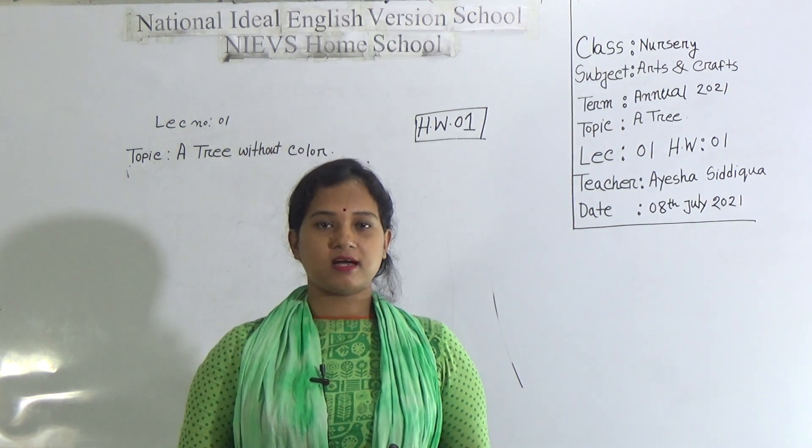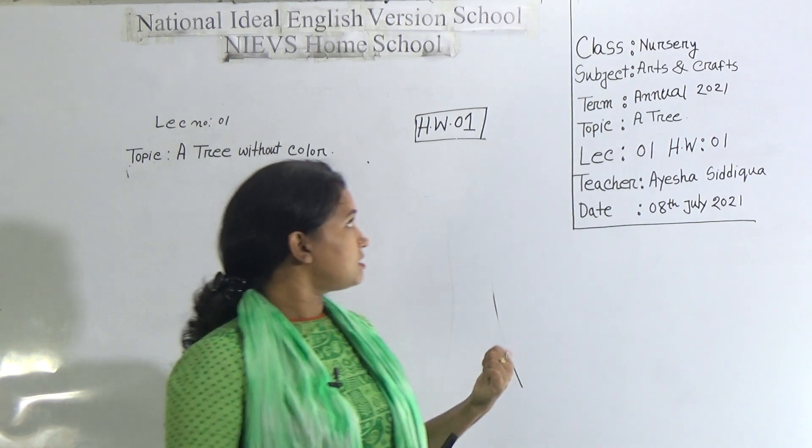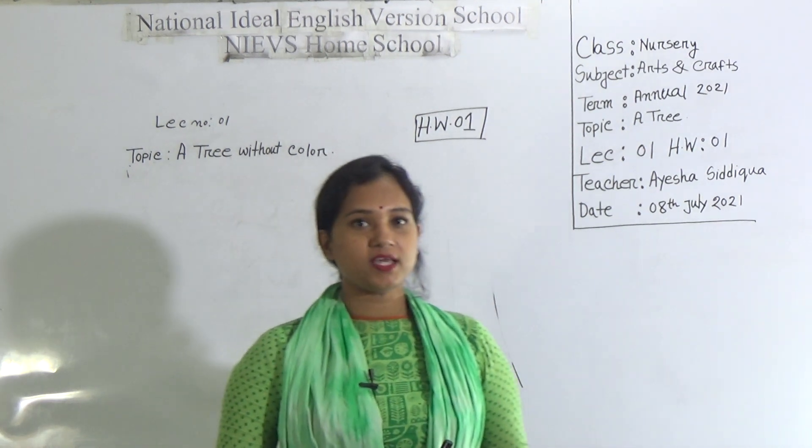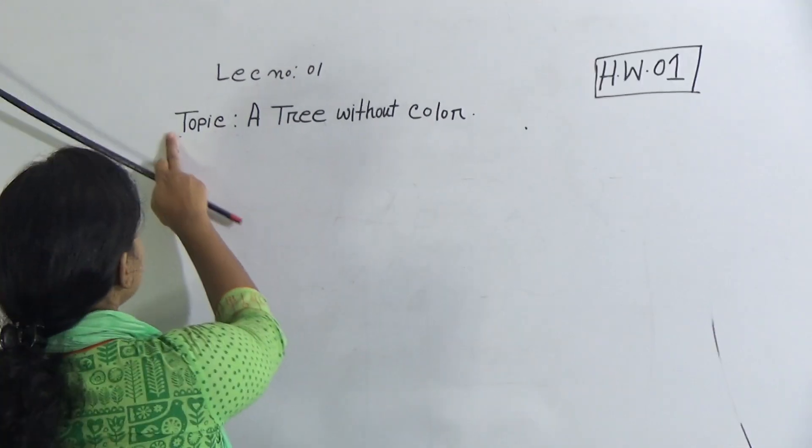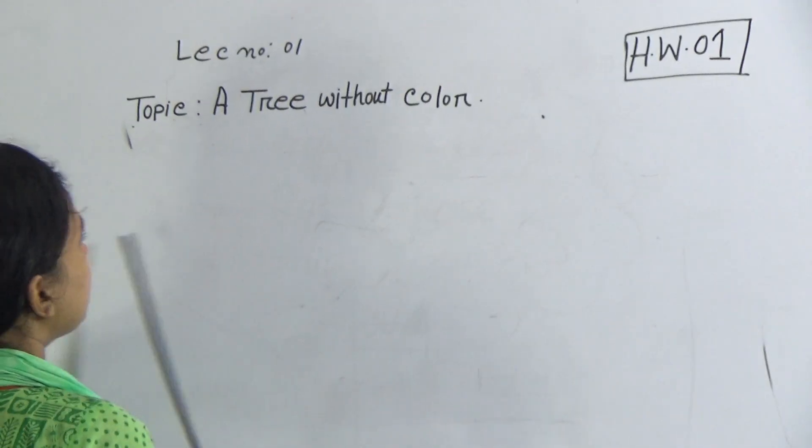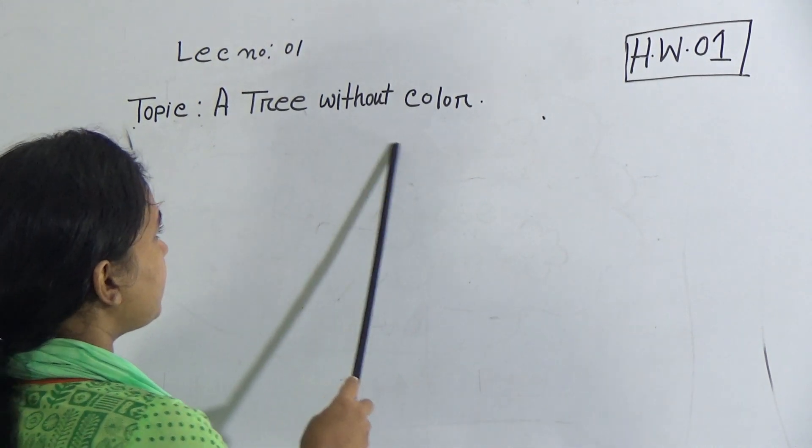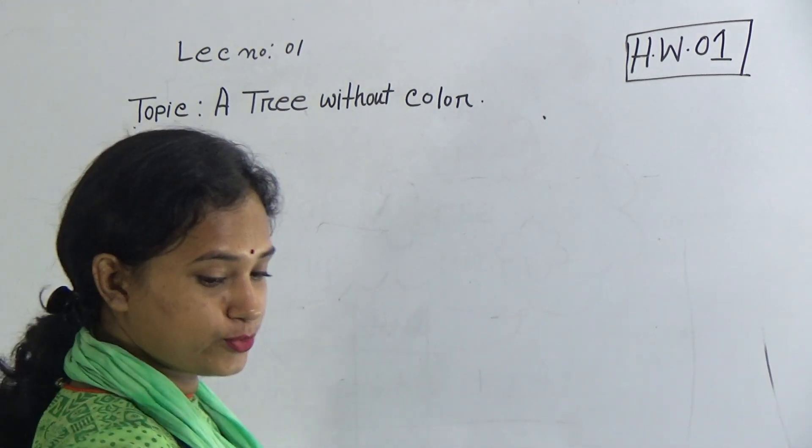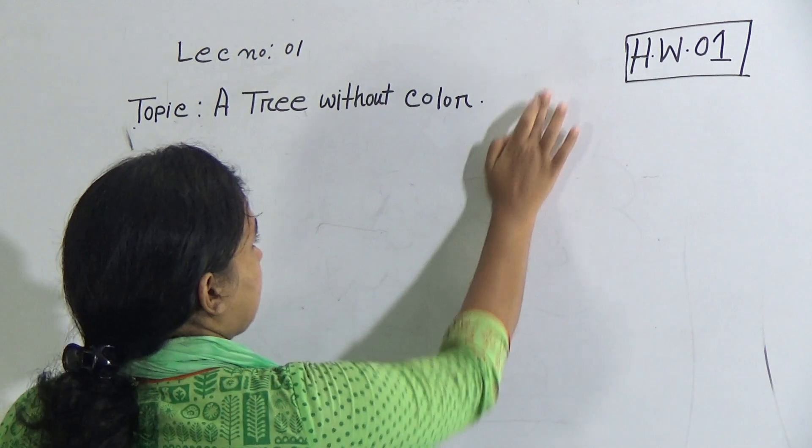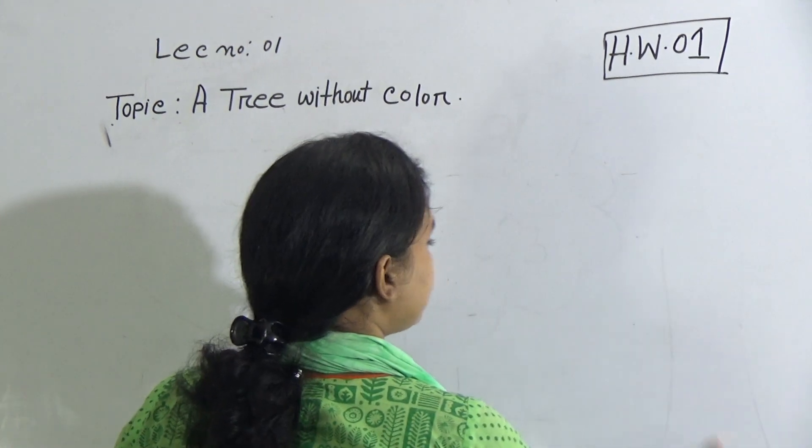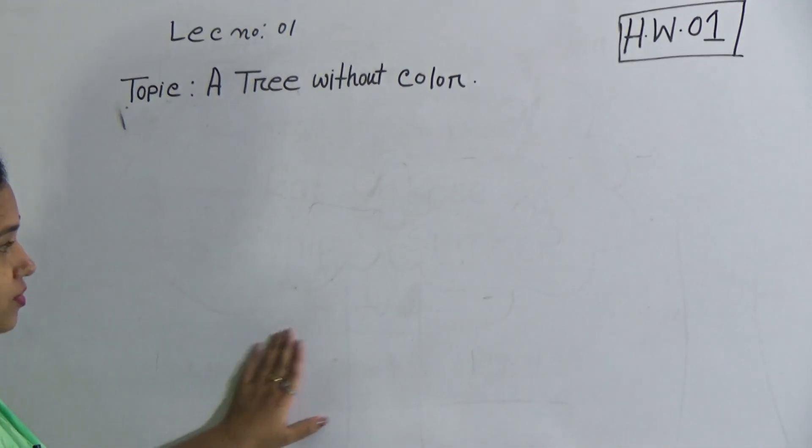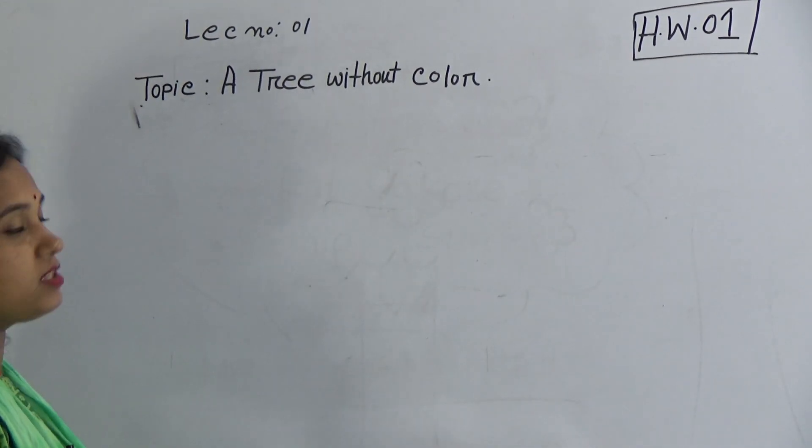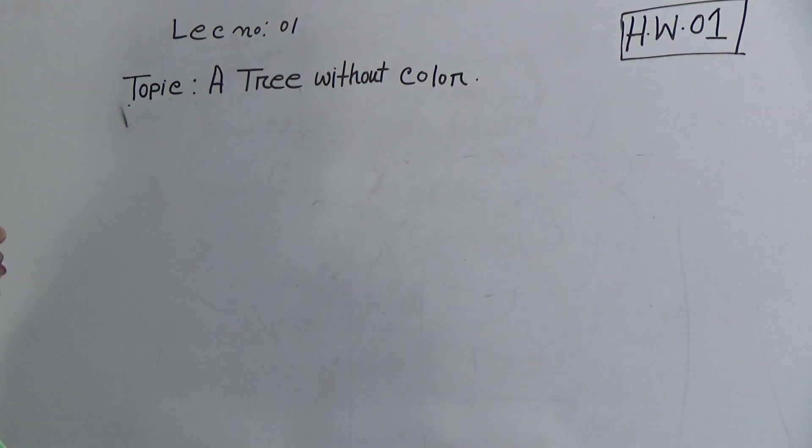Today I am going to take a class for class Nursery. And today's topic, this one is your first topic of annual term. And the topic is a tree without color. That means you will learn new things. Look at the screen, how I will draw the tree. You must follow my drawing, then this one is very easy to you.